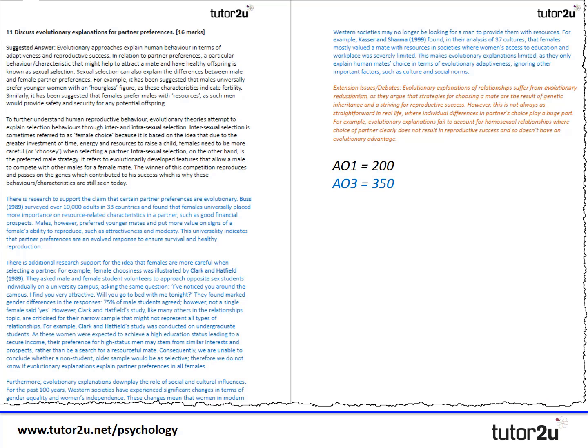The entire essay is now on screen — the first two paragraphs in black are the AO1 knowledge, and the three evaluation paragraphs follow in blue. There's also an additional evaluation point in orange showing how to craft an evaluation purely from issues and debates. Evolutionary explanations of relationships suffer from evolutionary reductionism, as they argue that strategies for choosing a mate are the result of genetic inheritance and striving for reproductive success. However, this is not always straightforward in real life where individual differences may play a huge role — for example, evolutionary explanations fail to account for homosexual relationships where choice of partner clearly does not result in reproductive success and has no evolutionary advantage.